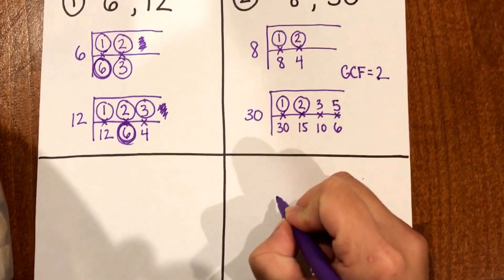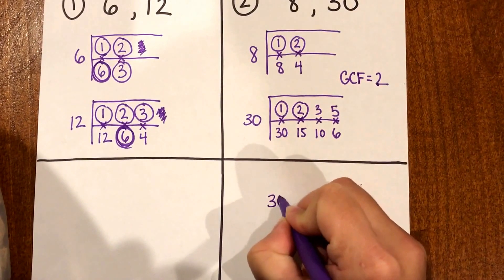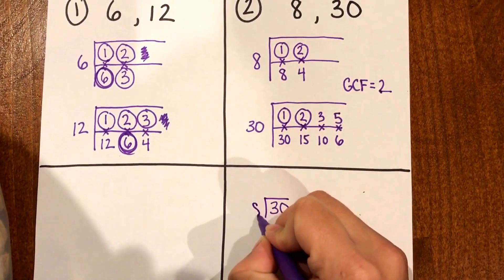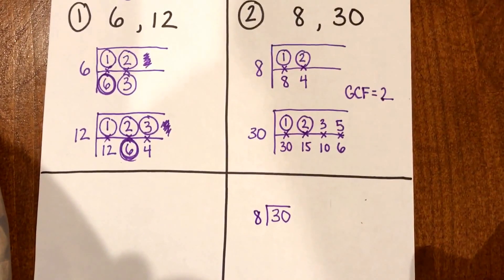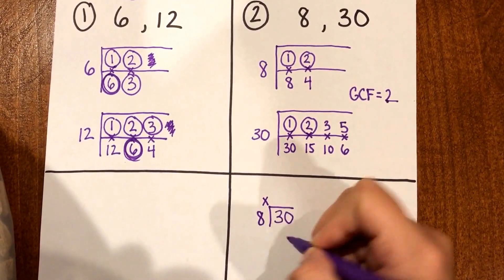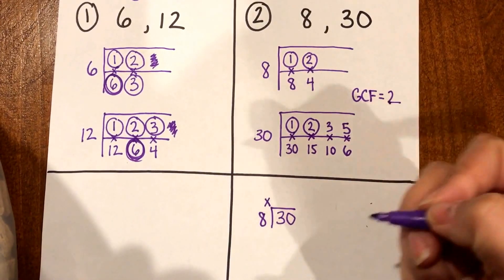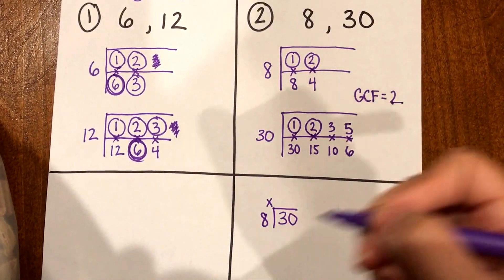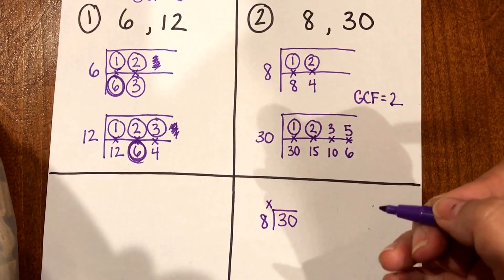So what I'm gonna do is I'm gonna use 30 divided by 8. Alright so I know that 8 times something is gonna give me close to 30 and if I had a calculator I could put 30 divided by 8 in it to find out what my whole number would be.